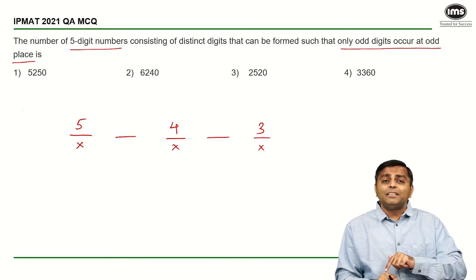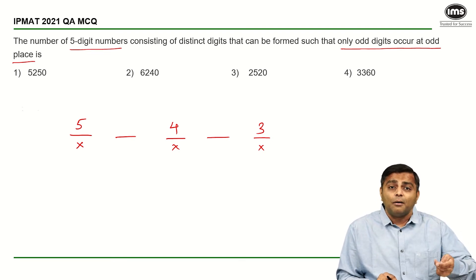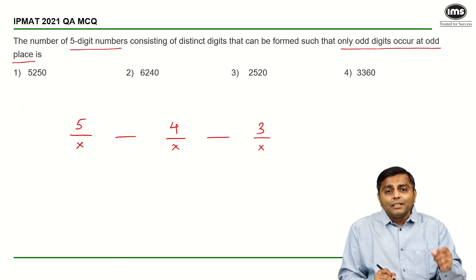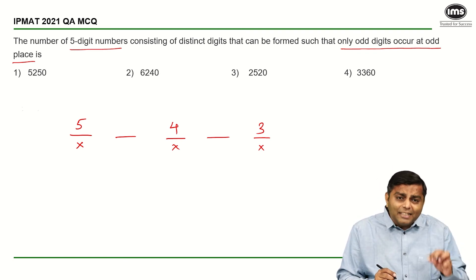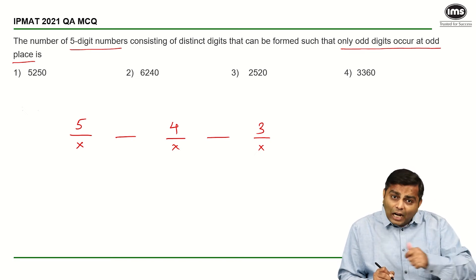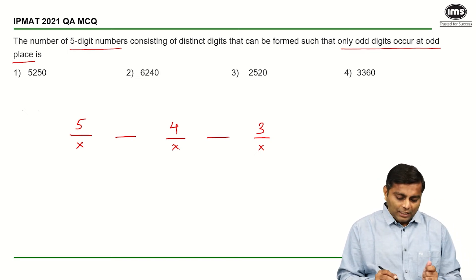Now at even places, odd digits can still come. Even places, there are no constraints. Remember that whenever you are doing such a kind of question, always start counting from the places where the constraints are specified. Start your question only from the constraint. So that's what we did.